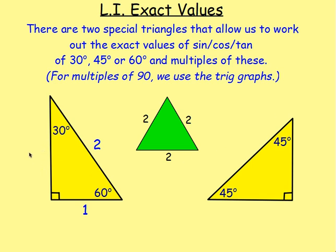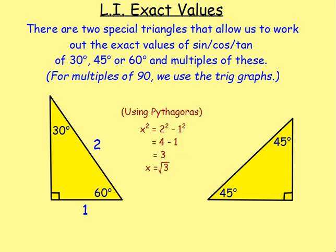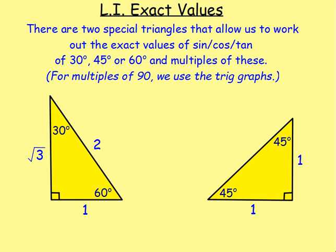The third side — how do you work that out? That's right, we use Pythagoras: 2 squared minus 1 squared, then square root it, and you end up with root 3. So this is one triangle we use for 30 or 60 degrees. For 45 degrees, we need this triangle here. Because both acute angles are the same, the two shorter sides are the same. Let's pick 1 for both. The hypotenuse? Pythagoras again — you end up with root 2.